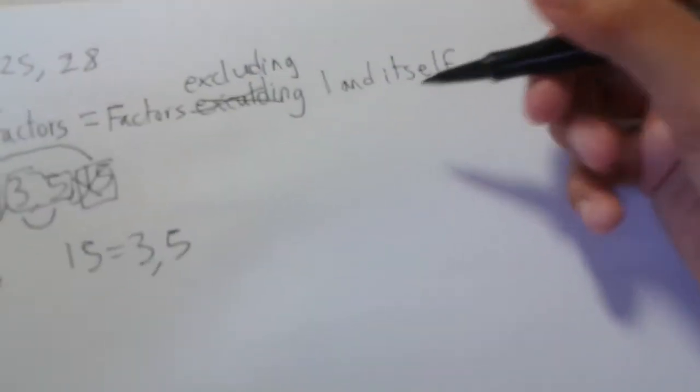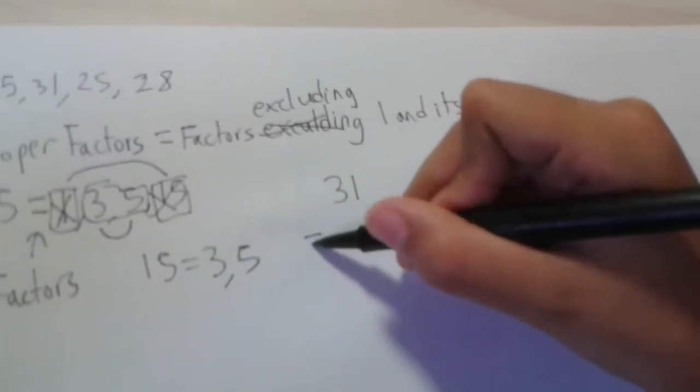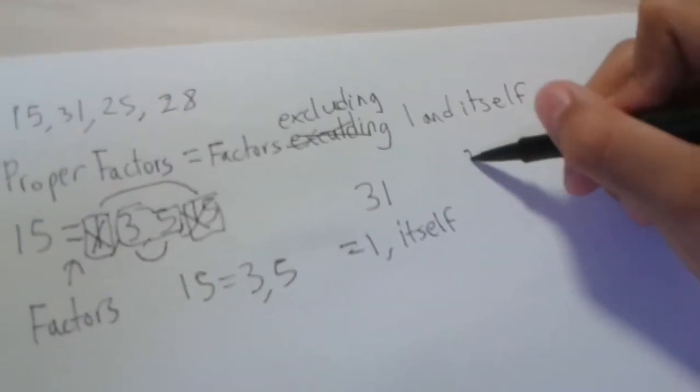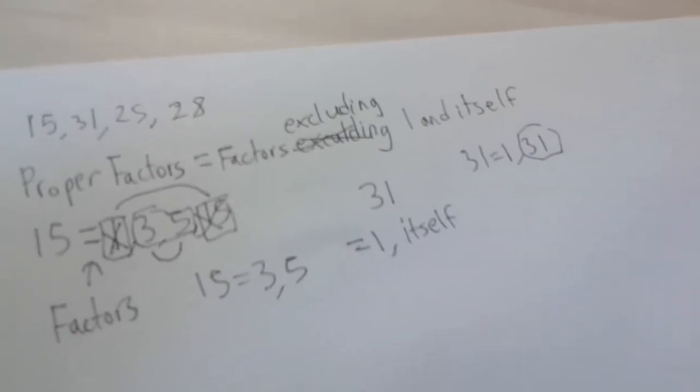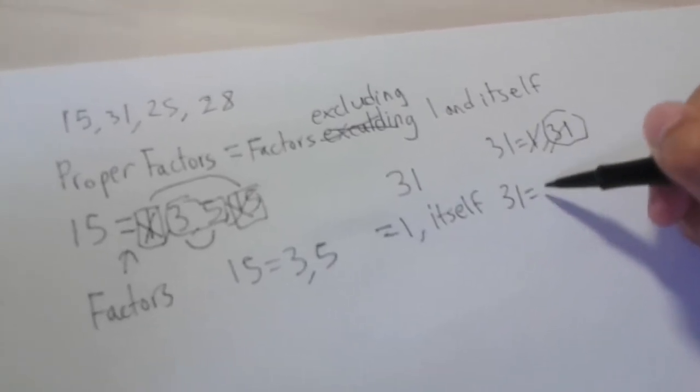So, let's move on to 31, which I chose for my prime factor. Since prime factors only have 1 and itself, therefore 31 will have 1 and itself, which is 31. And since prime factors exclude 1 and itself, 31's prime factor will be none.